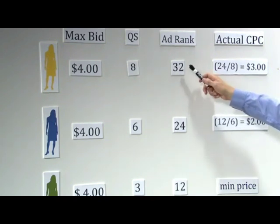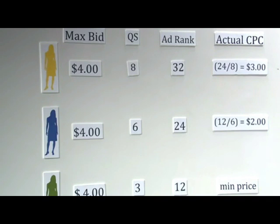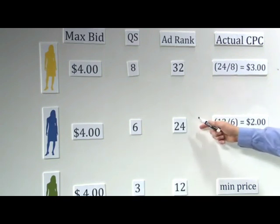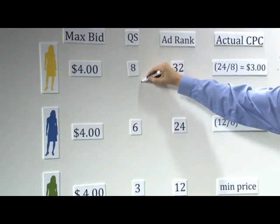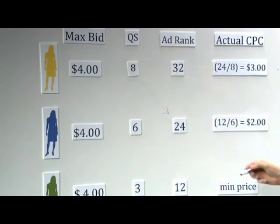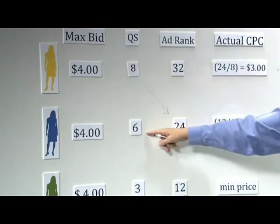This gives us ad ranks of 32, 24, and 12. So what determines the price? Well, the price is going to be the ad rank of the advertiser below divided by the quality score of the given advertiser. So in this particular case, it's going to be 24 divided by 8, or $3.